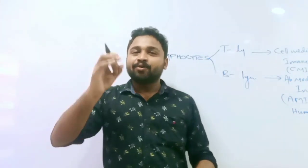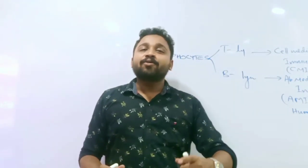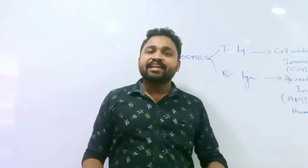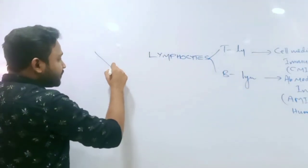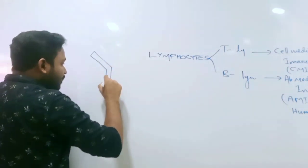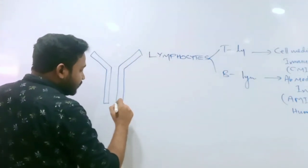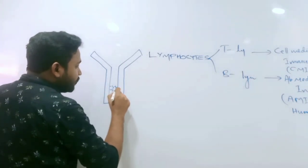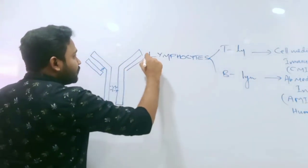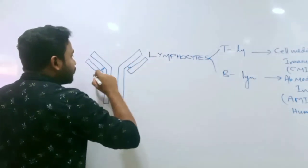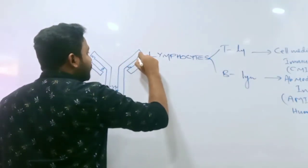In our immunity chapter under Health and Diseases, there is a question about antibody. Antibody has 4 chains — 4 polypeptide chains: 2 heavy chains and 2 light chains. The name of the antibody is immunoglobulin.